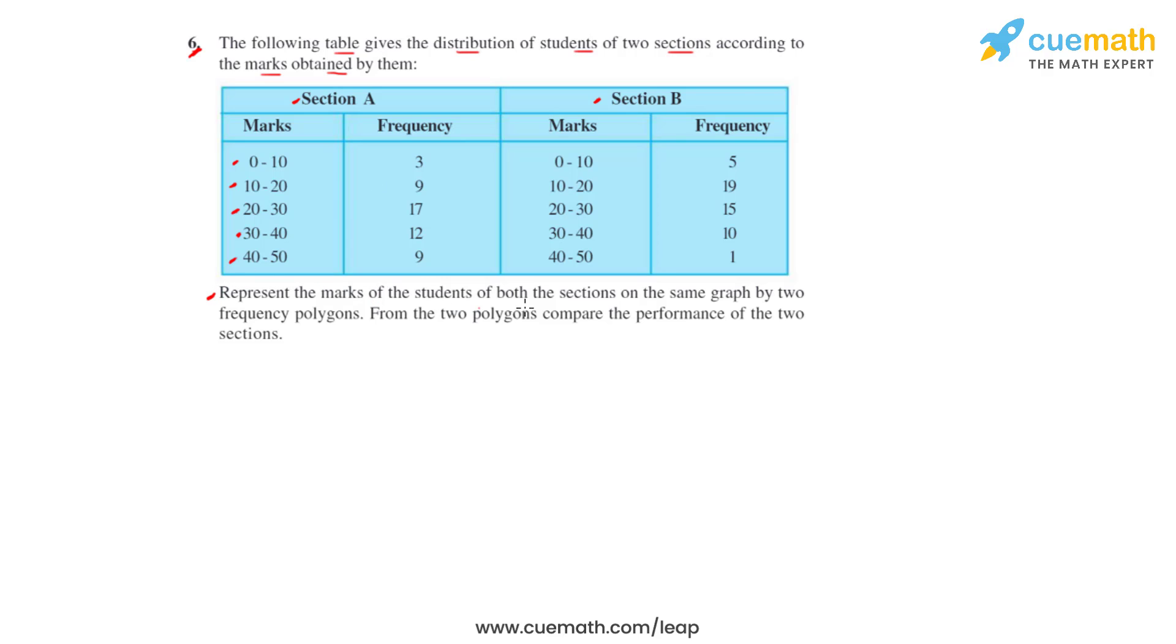We have to represent the marks of the students of both sections on the same graph by two frequency polygons. From the two polygons that we get, we have to compare the performance of the two sections. Frequency polygons can also be drawn independently without drawing histograms, but for that we require the midpoints of the class intervals used in the given data. The midpoints are also called the class mark for a particular class interval.